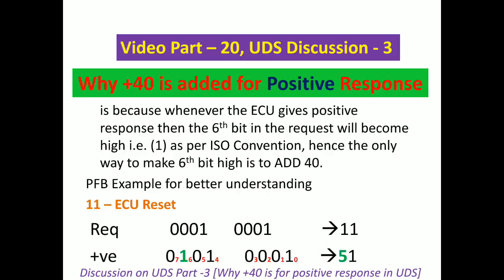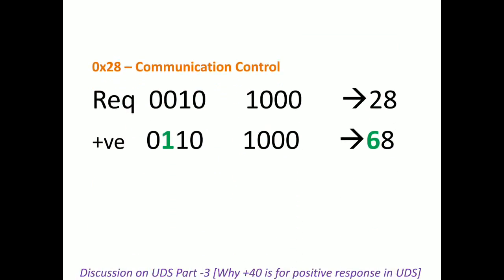The next example is Communication Control, service ID 0x28. Binary of 2 is 0010 and 8 is 1000. Again, for the positive response 0x68, the 6th bit becomes 1 — it becomes high.